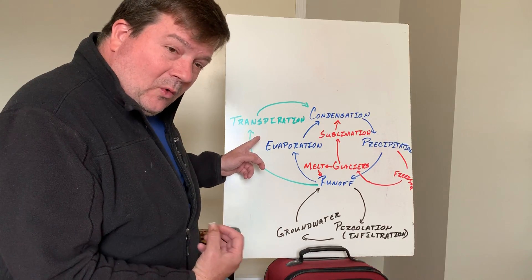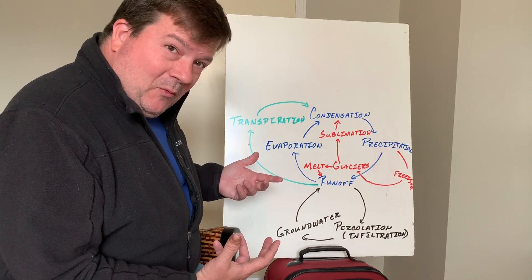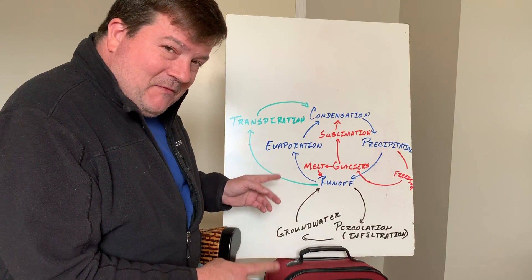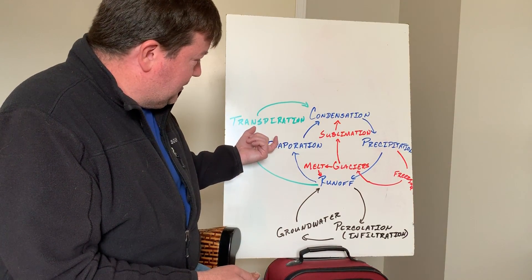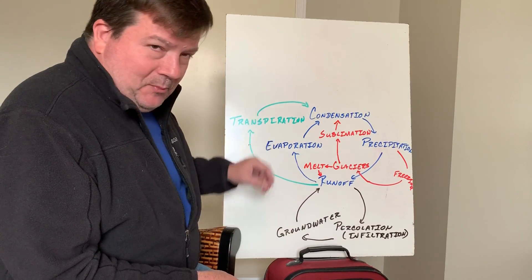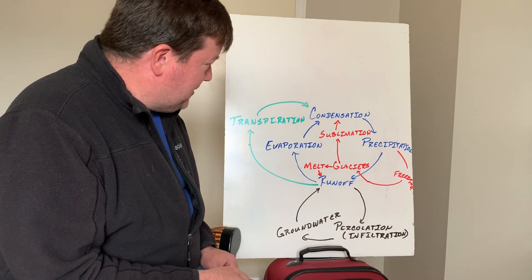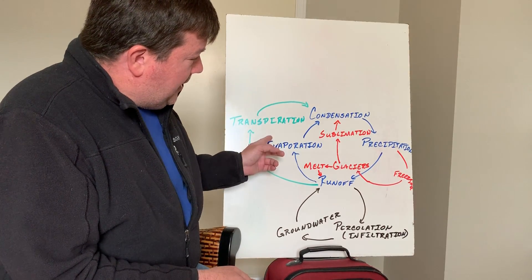Sometimes you'll see it on a water cycle as evapotranspiration. They'll just include these two words together as one word, but it's a separate process. It's one that actually utilizes plants to get water back into the atmosphere. Now once you've got this, then you can actually start to add other things to it.